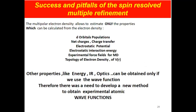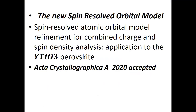This is very interesting because it allows you to estimate properties: orbital population, net charge, electrostatic potential, magnetization, and electrostatic interaction energy. But properties like energy, infrared, and optics can be obtained only if you use a wave function. Therefore, there is a need to develop a new method to obtain an experimental wave function. That is what we have done — what we call the new spin-resolved orbital model — which has been applied to yttrium titanium perovskite and will be published at the end of the year.